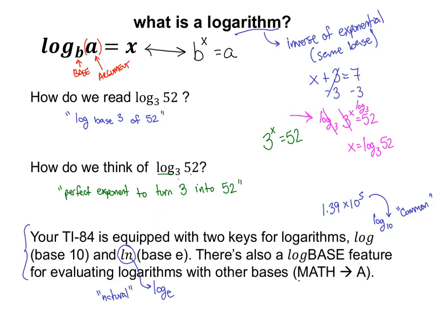If you go into your calculator and have a newer TI-84, hit the math key and scroll all the way down that list — it's actually easier to scroll up so it cycles back to the bottom. Option A is called 'log base.' When you select that option, it gives you a logarithm where you can type any base and any argument and it will do that calculation. So your calculator can handle log base 3 of 52 and output the answer.